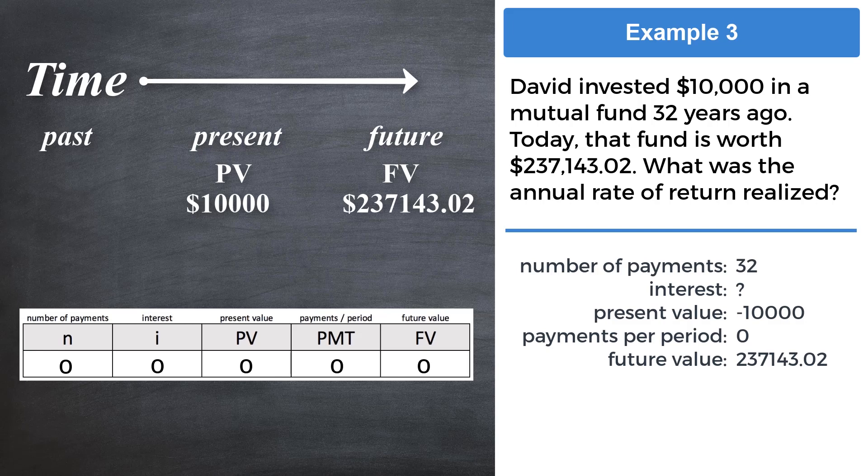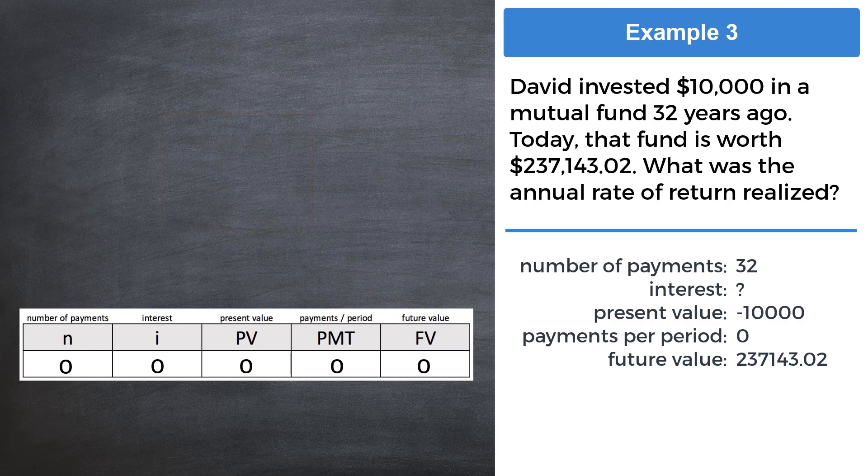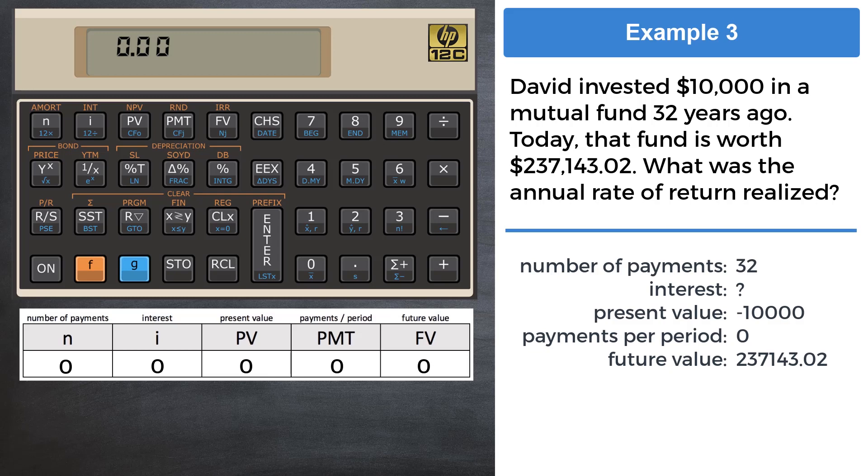The $10,000 were the present value at the time. The $237,143.02 was the future value. Enter those variables into the registers, and remember that 10,000 is a negative value. The money is flowing away from David. We will enter zero for the PMT register since there are no withdrawals or deposits, and we will put 32 into the N register, 32 years. Press I and we get 10.40. Our final answer is 10.4% annual rate of return.